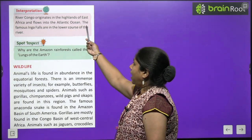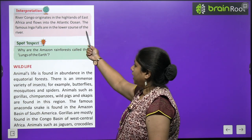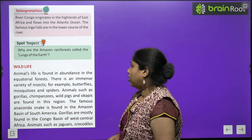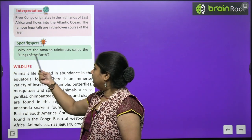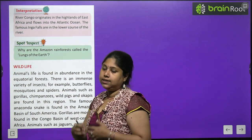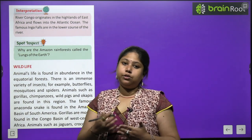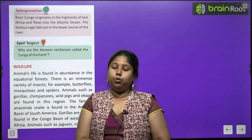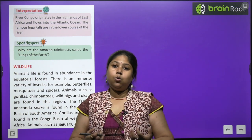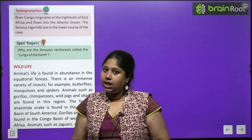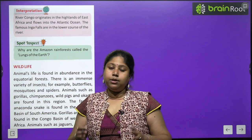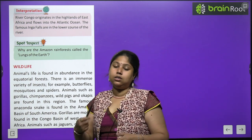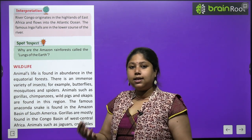River Congo originates in the highlands of East Africa and flows into the Atlantic Ocean. The famous Inga Falls are in the lower course of the river. Amazon rainforests are called the lungs of the earth — just as lungs supply oxygen to our body, Amazon, being full of trees, provides oxygen to the Earth. That is why it is known as the lungs of the earth — Amazon is the Earth's support system and gives us life. Because of its many trees, oxygen production is very high.